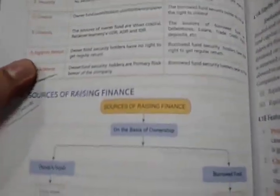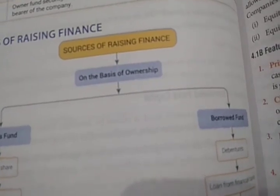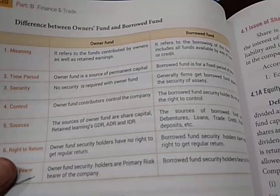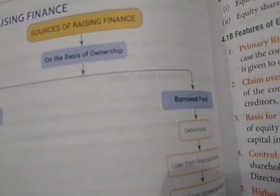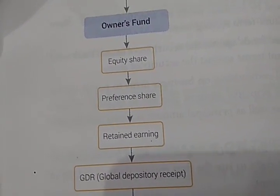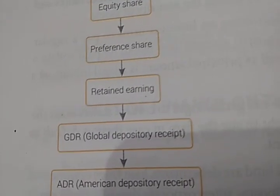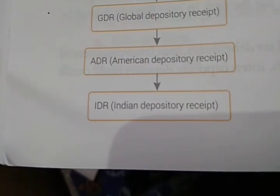There are two sources of raising finance on the basis of ownership: owner's funds and borrowed funds. Now we will cover the different types of owner's funds and borrowed funds. The different types of owner's funds are: equity shares, preference shares, retained earnings, Global Depository Receipts (GDR), American Depository Receipts (ADR), and Indian Depository Receipts (IDR). Starting with equity shares.